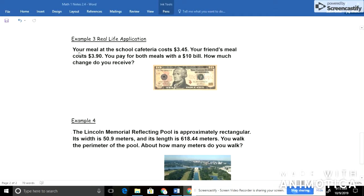Continuing on with example 3 here for the real-life application. It says, your meal at the school cafeteria costs $3.45. Your friend's meal costs $3.90. You pay for both meals with a $10 bill. That was awful nice of you. How much change do you receive? So, we have to think about the total that you pay. You're paying for yours and your friend's. So we're going to have to add those two together. And then, to find out how much change we receive when we pay with a $10 bill, we'd have to take that $10 and we'd have to subtract the total of your meal and your friend's meal.